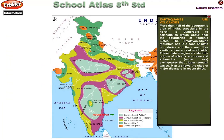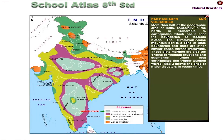Earthquakes and Volcanoes. More than half of the geographic area of India, especially in the north, is vulnerable to earthquakes, which occur near the boundaries of tectonic plates. The Himalayan Alpine Mountain Belt is a zone of plate boundaries, and there are other similar zones spread worldwide.